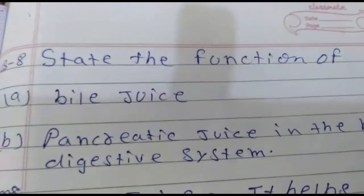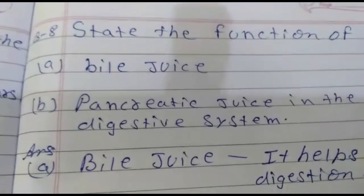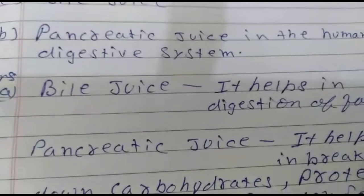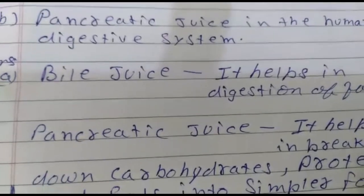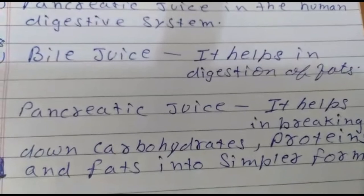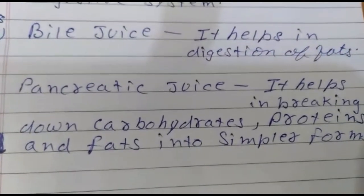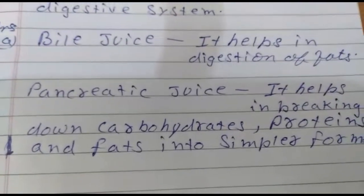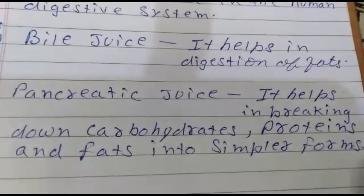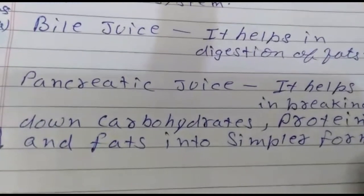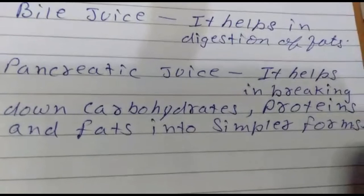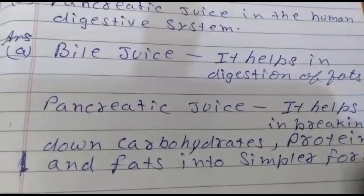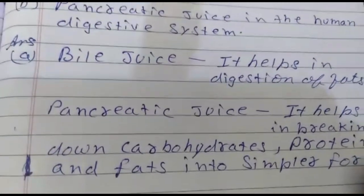Question number eight: state the function of bile juice and pancreatic juice in the human digestive system. Bile juice helps in the digestion of fats. Pancreatic juice helps in breaking down carbohydrates, proteins, and fats into simpler forms. We have now completed the D part.